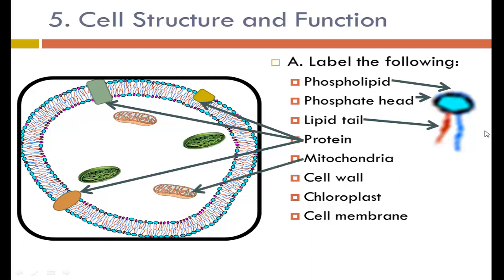The mitochondria look like little kidney beans with folds inside; this is where the cell extracts energy from sugars. The cell wall is the big dark line and gives the cell a regular square shape, as opposed to a cell with only a cell membrane. Chloroplasts are green because of the pigments inside that absorb light; this is where plant cells use light energy to create sugars. The cell membrane is made of the phospholipids.